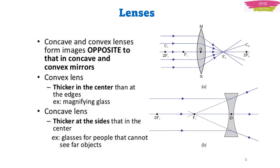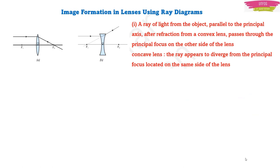To put it simply: concave and convex lenses form opposite images to those in concave and convex mirrors. If you keep this one line permanently in mind, most of your exam answers on this topic will be correct. A convex lens is thicker in the center and thin at the edges — the best example is a magnifying glass. A concave lens is thicker at the sides and thin in the center — used in spectacles for people who cannot see distant objects.